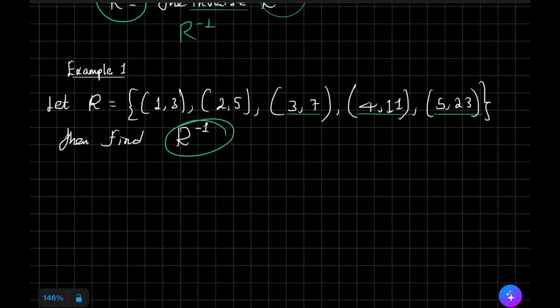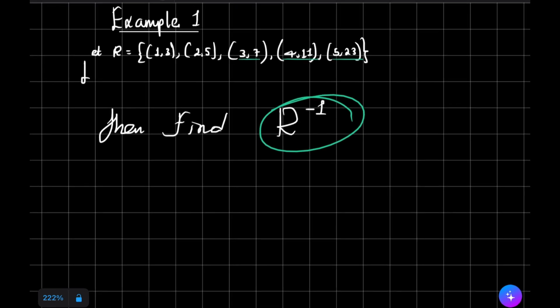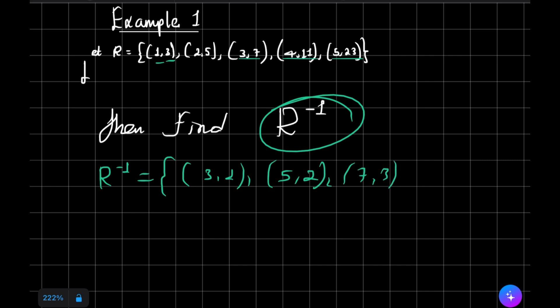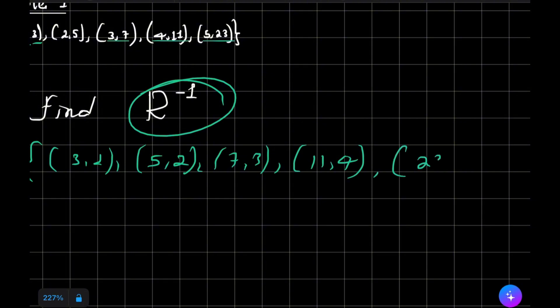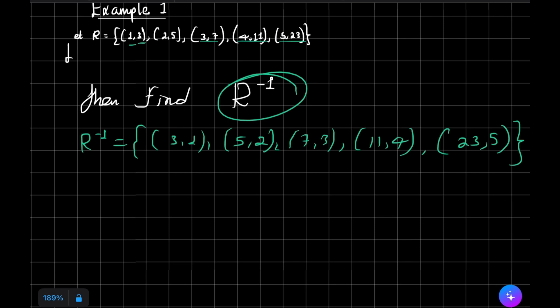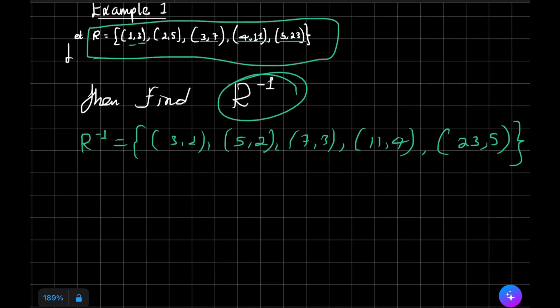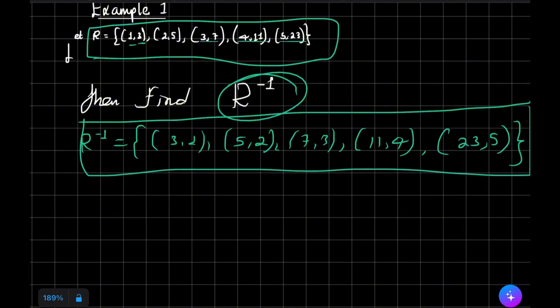Find R inverse. R inverse is a relation. We interchange the place of domain and range. So R inverse is going to be: (3, 1), (5, 2), (7, 3), (11, 4), and (23, 5). These are the numbers — the inverse relation, or the inverse of that relation. We interchange the place of domain and range.